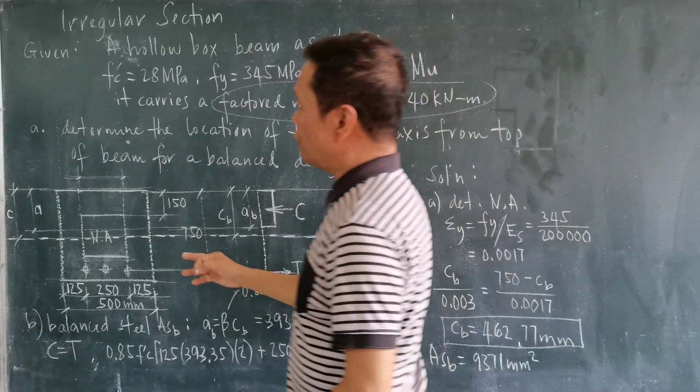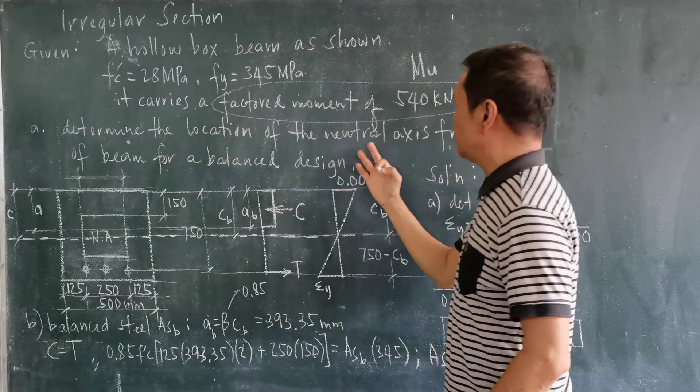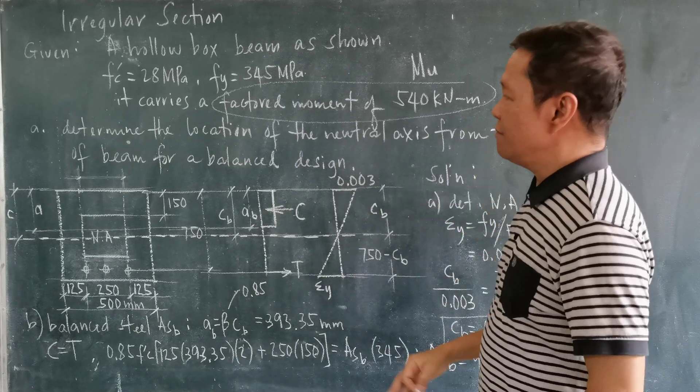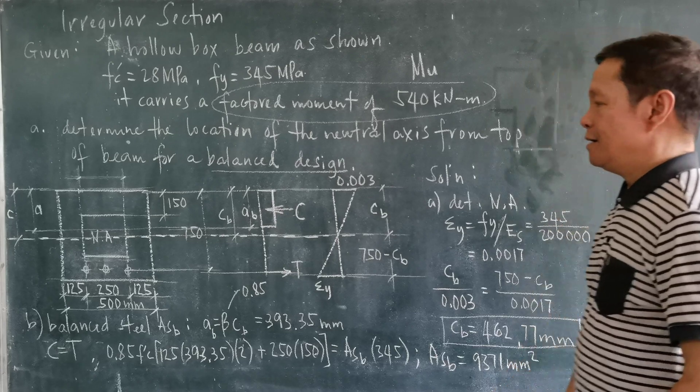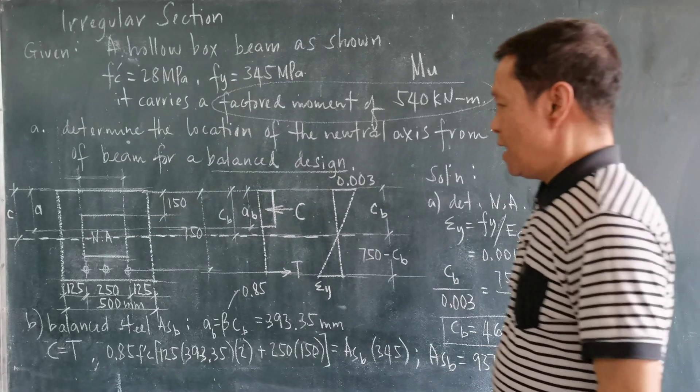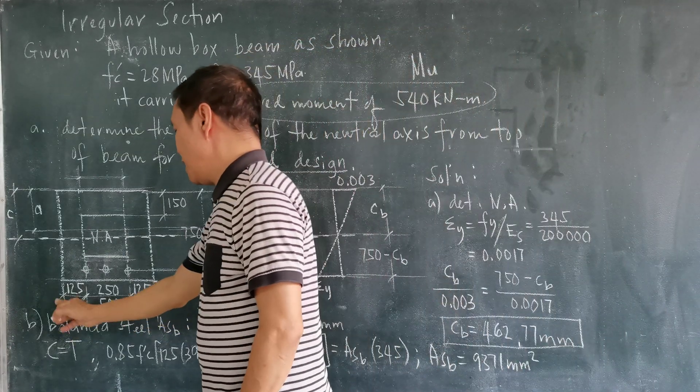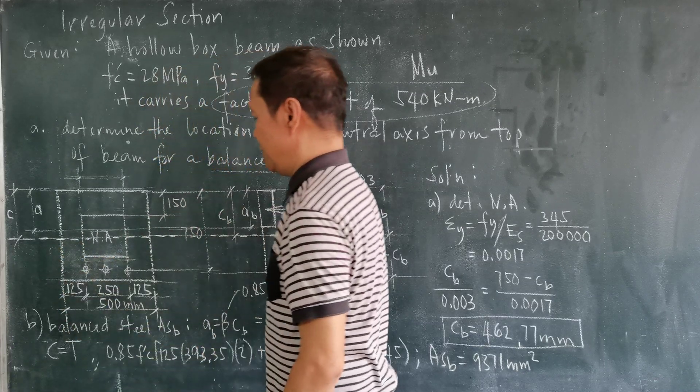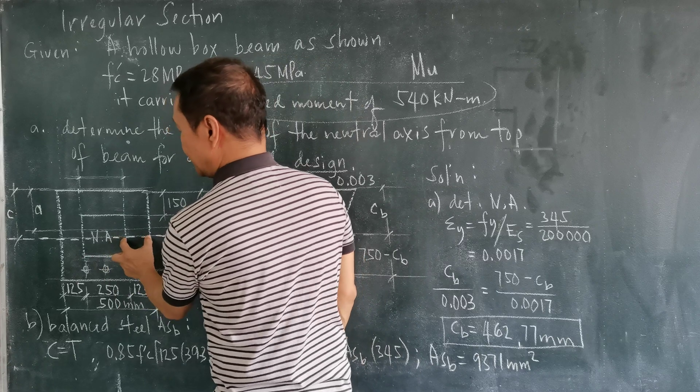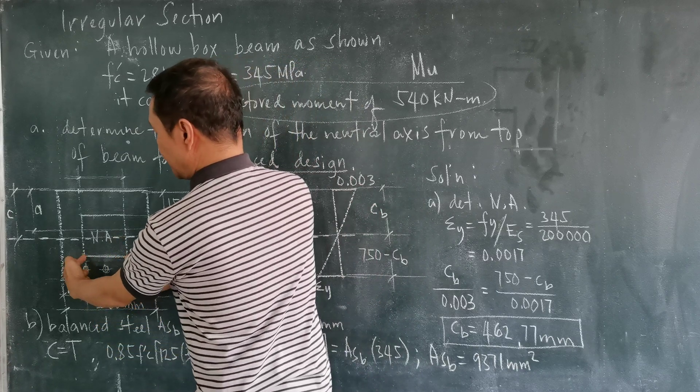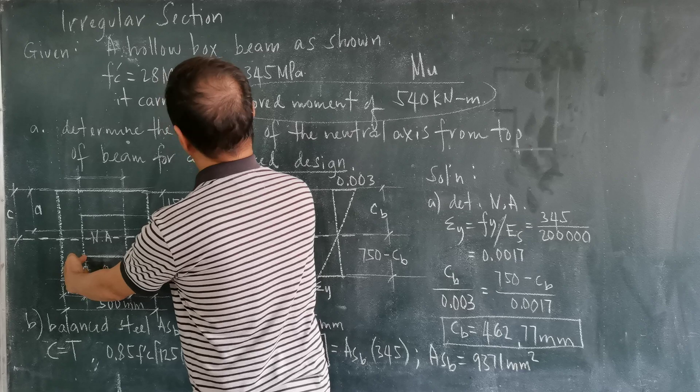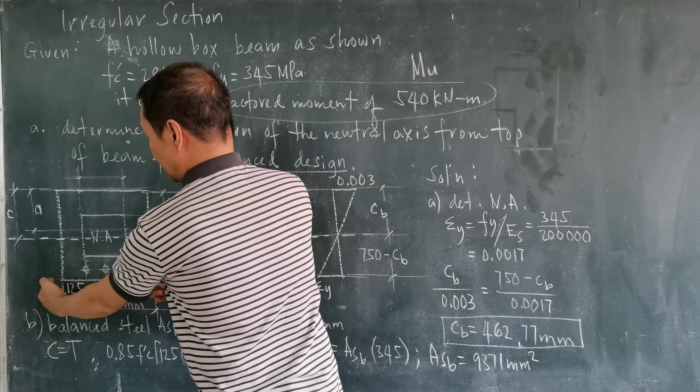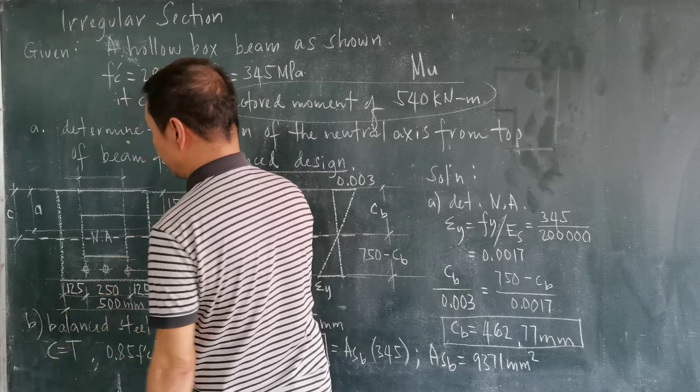The first requirement is determine the location of the neutral axis from the top of the beam for a balanced design. So the figure is this one. The thickness of this is 125 mm, same is true with the outer side.